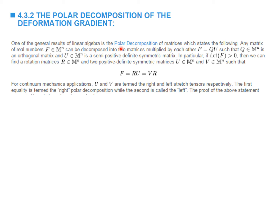A very important result from linear algebra is that any matrix F can be decomposed into two matrices Q multiplied by U, where Q is some orthogonal matrix and U is a semi-positive definite symmetric matrix. Applied to solid mechanics, any matrix F whose determinant is greater than zero can be decomposed into matrices RU, where R is a rotation and U is a positive definite symmetric matrix — this is called the right polar decomposition — or F can be decomposed into the matrices VR, where R is the same rotation matrix and V is a positive definite symmetric matrix; this is called the left polar decomposition.